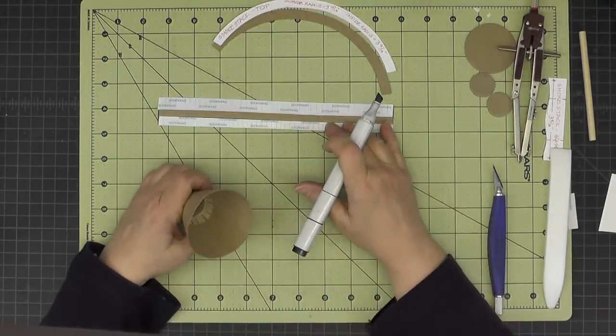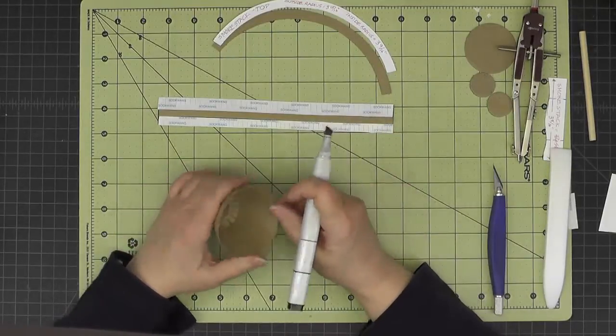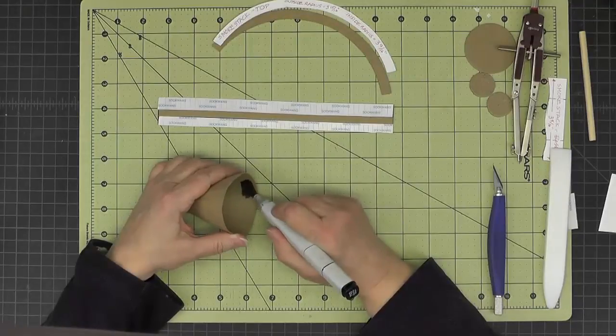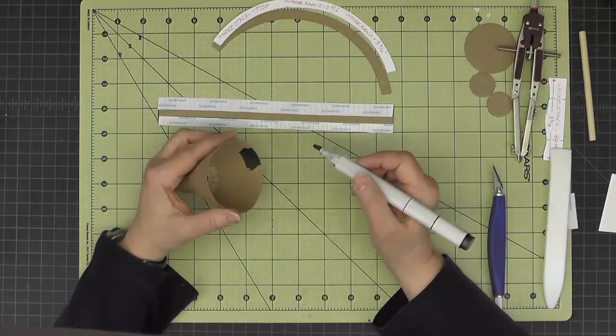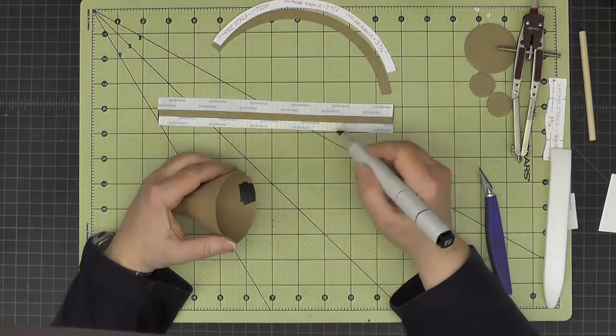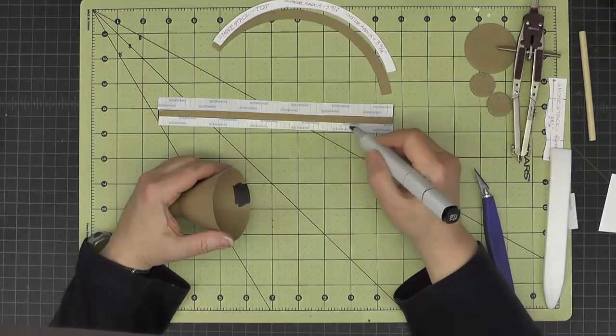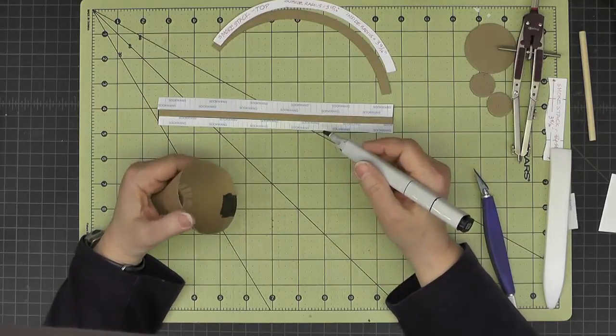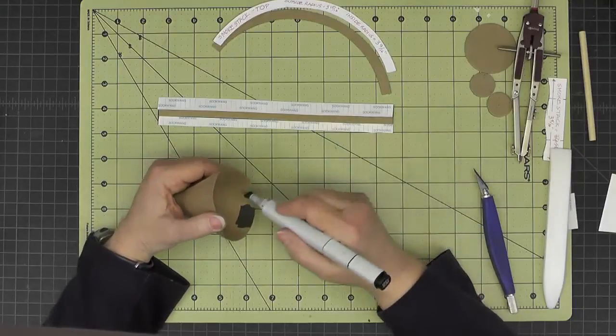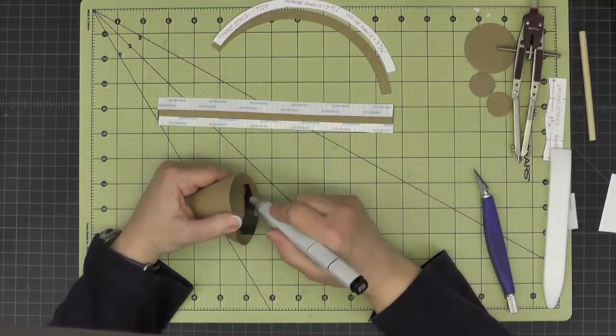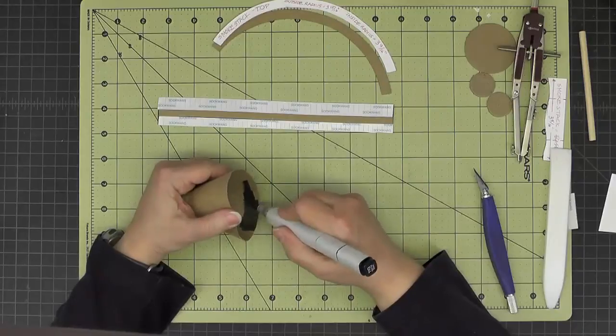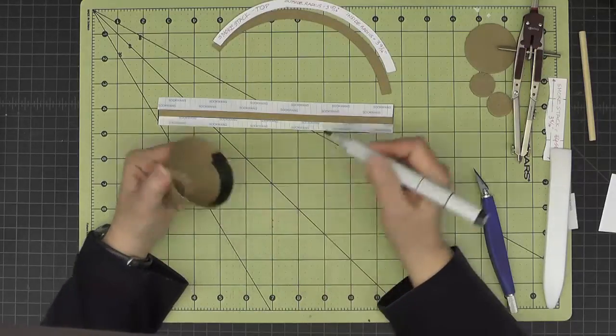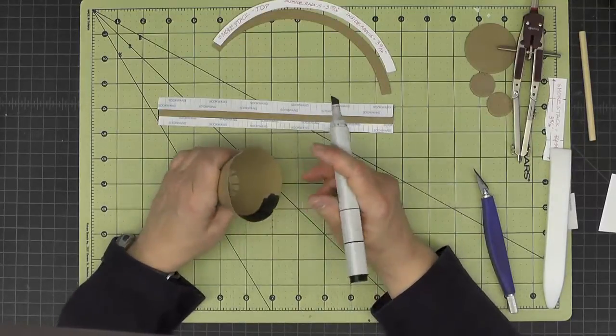And then before we go attaching this, I'm going to take my black marker and come down inside of here, about a half an inch. Just in case we get any gaps when we go to attach this. I don't want any of that raw chipboard to show through. So I'll go ahead and ink around here and allow that ink to dry before we start attaching the straight section.